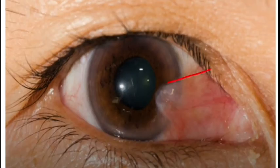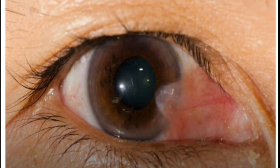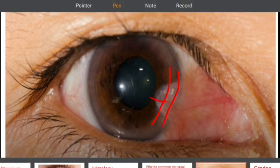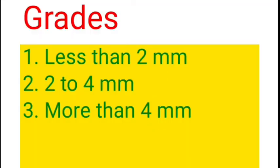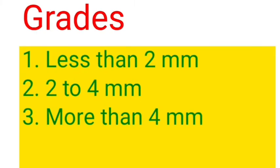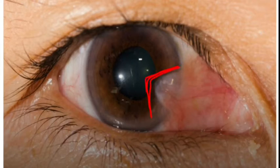Grading depends on how far the pterygium has encroached onto the cornea. Grade 1 is less than 2 mm onto the cornea; grade 2 is 2 to 4 mm; grade 3 is more than 4 mm or encroaching onto the pupillary area. In grade 1, an iron deposit line called Stocker's line is seen on the corneal epithelium, anterior to the advancing edge of the pterygium.